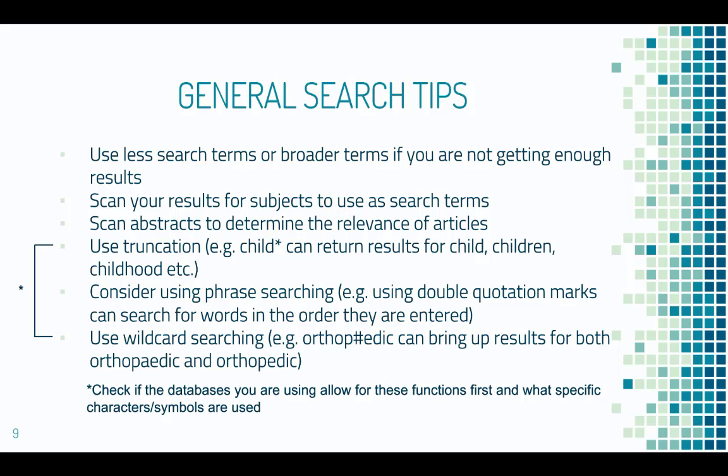Some databases will allow truncation, which allows you to enter the base of the word and the truncation symbol such as an asterisk to broaden your search to include different word endings and spellings. For example, entering child followed by an asterisk could return results for child, childs, children, childhood, and more.